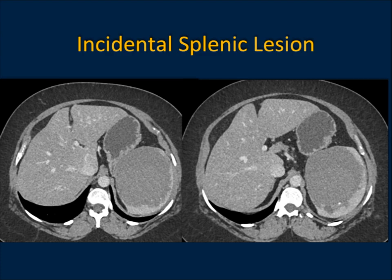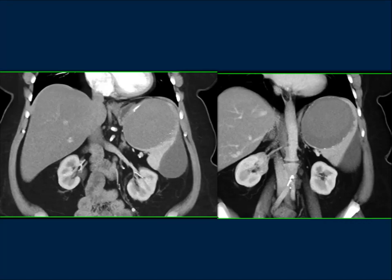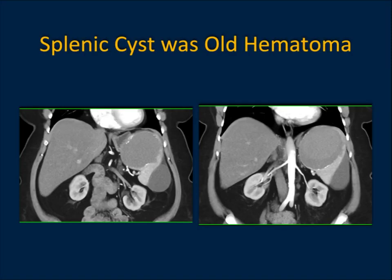Another case — incidental splenic lesion with slight irregularity of the posterior wall. You might ask: is this a complex cystic lesion? Could it be a cystic metastasis? There are subtle perfusion changes in the spleen, and that posterior wall does give concern. It still could be a cyst, and there is some calcification. Old hematomas can have calcification — sometimes dense, sometimes thin. Because the patient was symptomatic, this was resected and turned out to be an old hematoma. So cystic lesions, particularly with calcification, should always prompt consideration of hematoma.